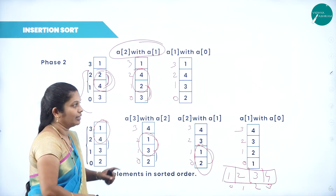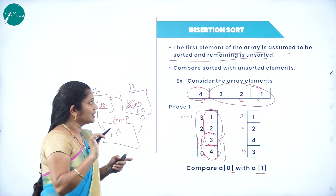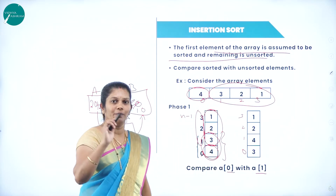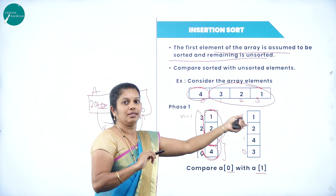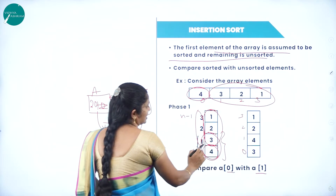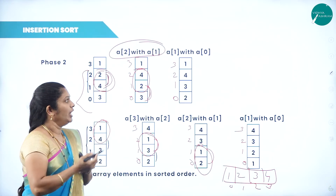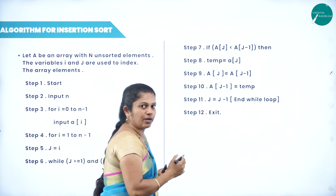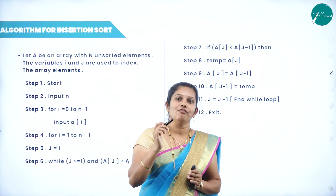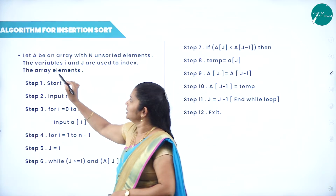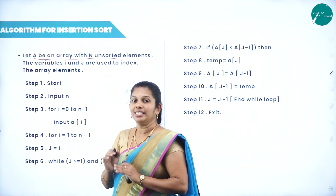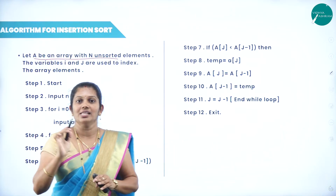Now the array is in sorted order: 1, 2, 3, 4. This is called insertion sort. In insertion sort, we assume the first element is sorted and the remaining elements are unsorted. Comparison takes place between the sorted and all remaining unsorted elements. The unsorted elements start from position 1 to the last one. We will now explain the algorithm for this.